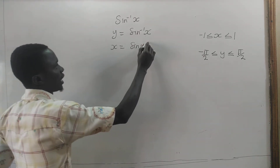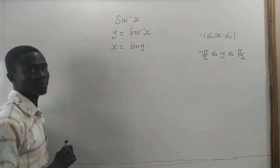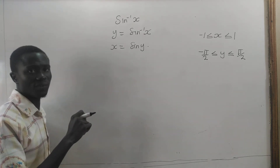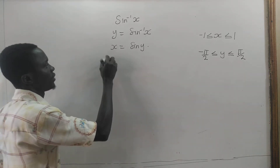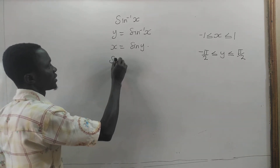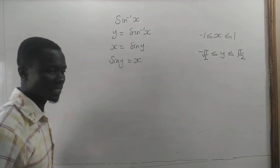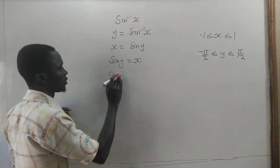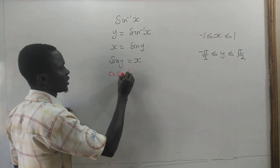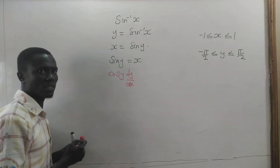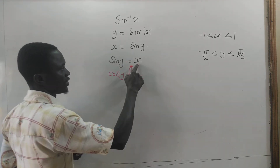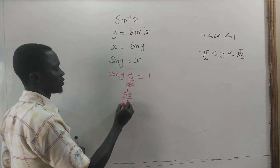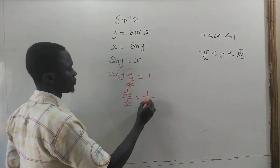How do we differentiate x equal to sin y? We are going to do implicit differentiation. If you have not watched my video on implicit differentiation, check the description for that video. Here we have sin y equal to x. Using implicit differentiation, if we differentiate sine we get cosine y, and then we bring dy on dx since we are differentiating implicitly with respect to x. If we differentiate x with respect to x we get 1. Dividing both sides by cosine y, we get the derivative of y with respect to x equal to 1 divided by cosine y.